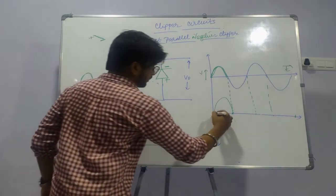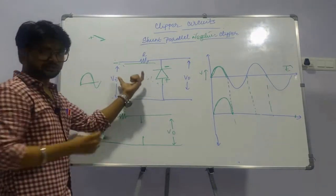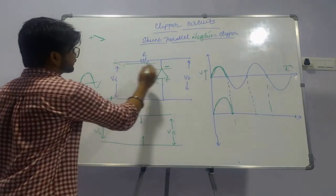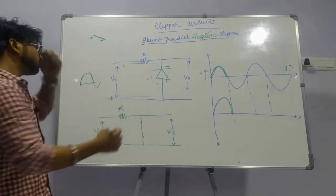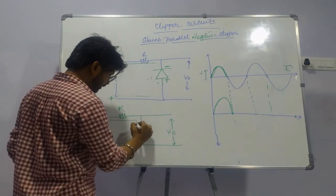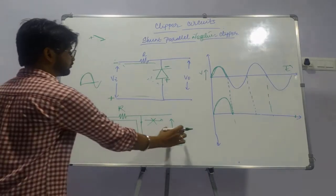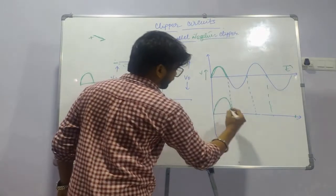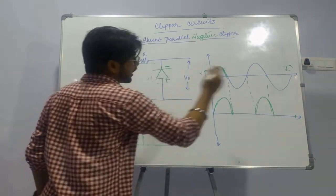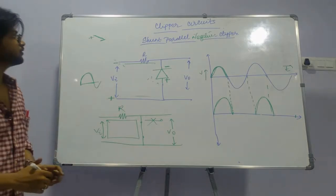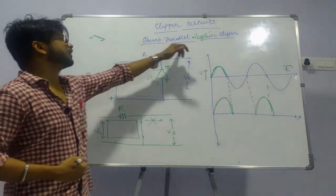In the negative half cycle, the negative is connected to the negative of the diode and the positive to the positive of the diode, so it behaves as a closed circuit. The current passes entirely through the diode section and there is no output in the negative half cycle — it is clipped away. Only the positive half cycle remains in the output. This is the shunt parallel negative clipper.